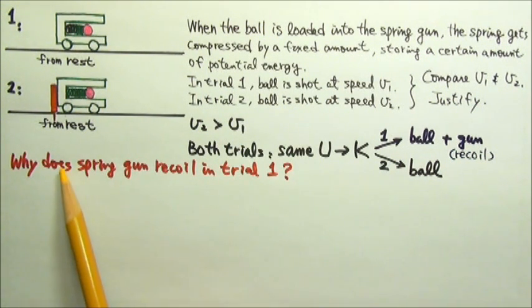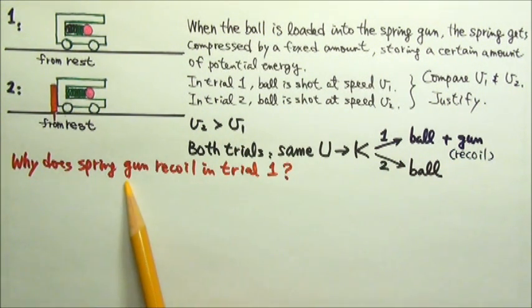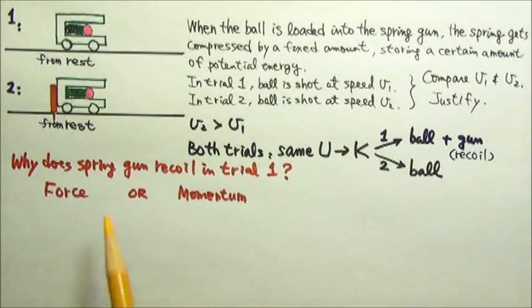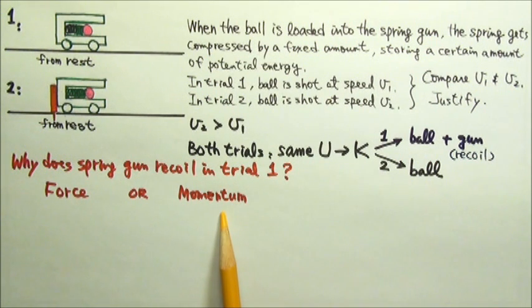Of course, we should also explain why the spring gun would recoil in trial 1. For this part, we can either take a force approach or a momentum approach.